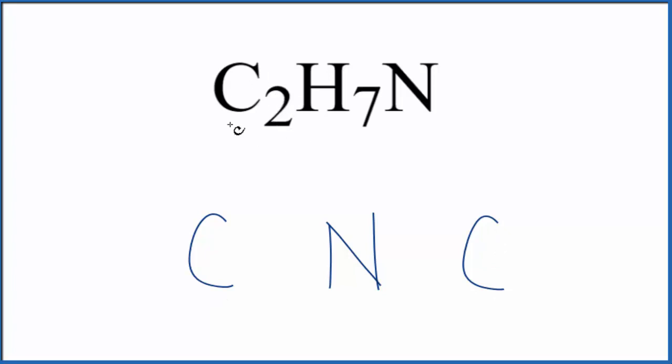let's count up the valence electrons. Carbon has four valence electrons. We have two carbons. Hydrogen, that's in group one, it has one. We have seven of those. And then nitrogen group 15, sometimes called 5A, has five valence electrons. That gives us a total of 20 valence electrons for C2H7N, dimethylamine.